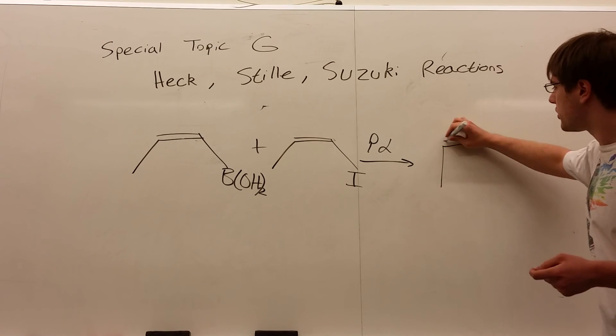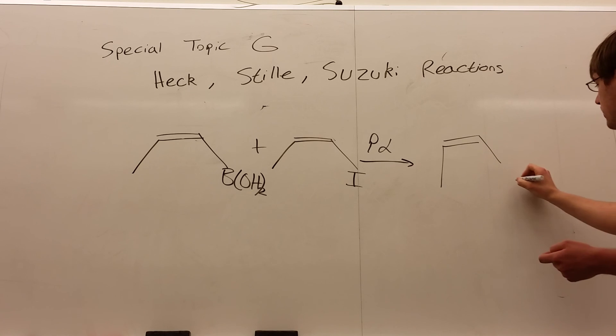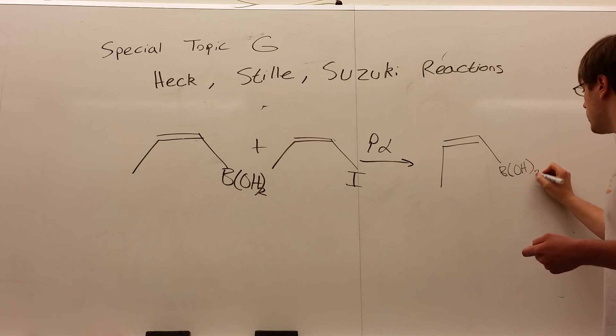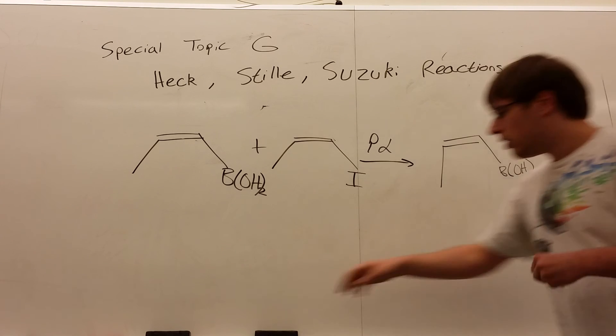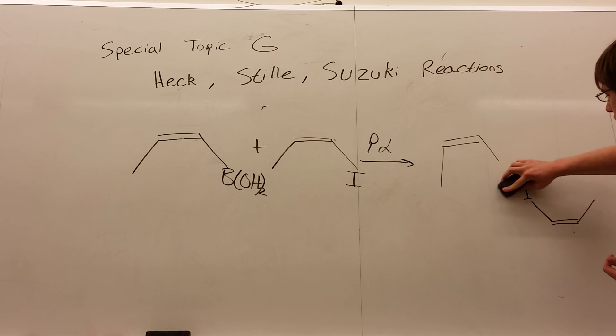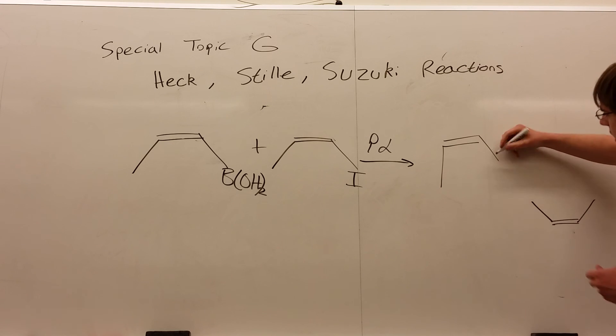Line up the special group of one with the special group of the other. So we'll have the borate over here, B(OH)2. The iodine on the other will line up with that. So I just turn the molecule upside down so I can get these pointing at each other. Now erase the special groups, the B(OH)2 and the iodine, and just connect the bonds. So like that.